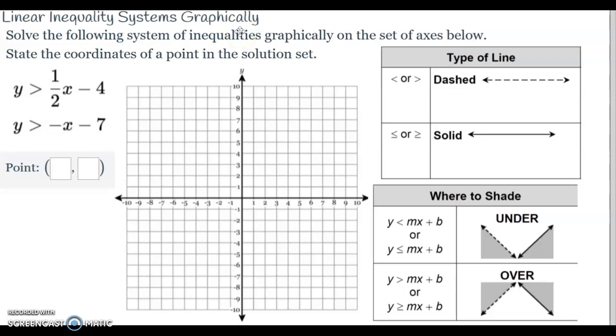We're going to graph some inequalities and look at a system - what are the solutions for both inequalities. Previously we did systems of linear equations that would have one point for a solution. But with a system of inequalities, you could have a whole lot of different points. So we're going to graph both inequalities and show you the possibility of all the points, and we're going to pick out one and say that's the answer.